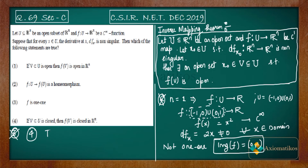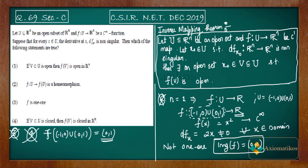The image of U = (-1, 0) ∪ (0, 1) under f(x) = x² is (0, 1), which is an open interval — not closed. So the image of a closed set is not closed here, meaning the fourth option is also incorrect. We have now proved options two, three, and four are incorrect, so option one must be correct.